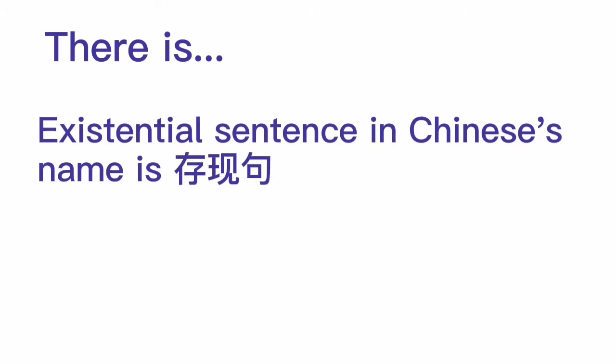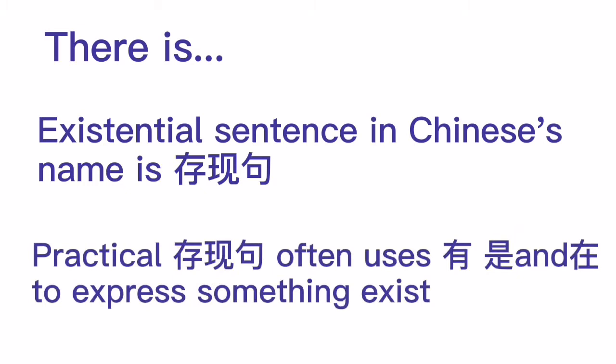Such an existential sentence in Chinese is called 存限句. A practical 存限句 often uses 有, 是, and 在 to express that something exists. Today we will talk about the 有 part.